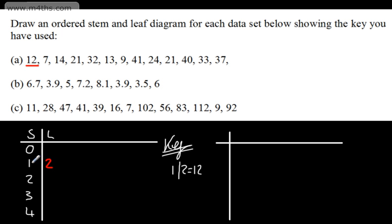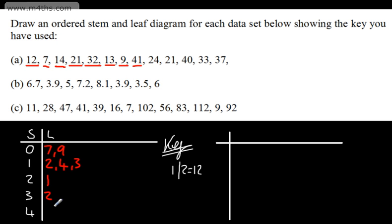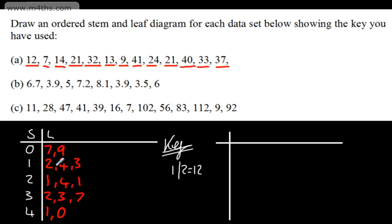12 means the 2 goes in the tens-1 row. With 7, I put 0/7 — 0 tens, 7 units. Don't cross these out in case we make a mistake. 14 puts a 4 after the 2. 21 puts a 1 in the tens-2 row. 32 puts a 2 in tens-3. 13 puts a 3. 9 goes as 0/9. 41 puts a 1 in tens-4. 24 puts a 4, 21 puts another 1, 40 puts a 0, 33 puts a 3, and finally 37. Check the number of data items to make sure you've put them all in.